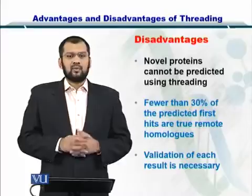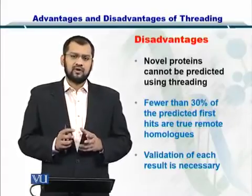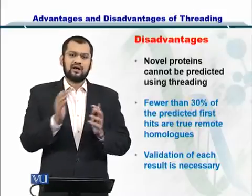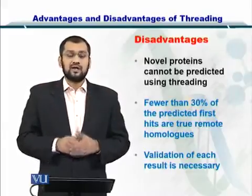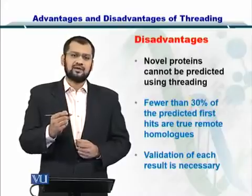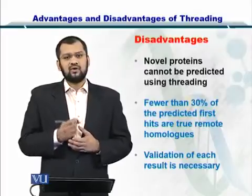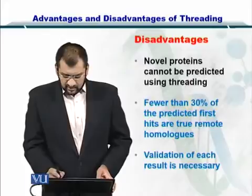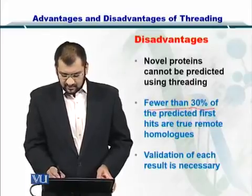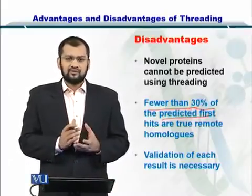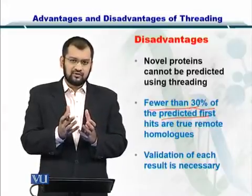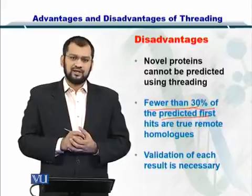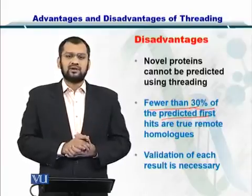Towards the disadvantages: if you are trying to take some folds from one protein and some other folds from another protein, and creating a combination of these folds to form a new protein structure, there is a high chance that the structure you create may not be biologically plausible. Therefore, validation of the structures output from threading or fold recognition is essential. Fewer than 30% of the predicted structures have homologues, meaning you end up creating structures using fold recognition which do not have homologues in the PDB. This must be addressed through a process called validation, which is the major disadvantage of fold recognition.